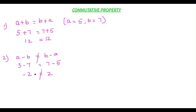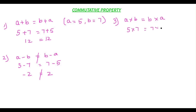Now let's see whether commutative property holds good for multiplication: a times b equals b times a. Using the same values, a equals 5 and b equals 7: 5 times 7 is 35, and 7 times 5 is also 35. So commutative property holds good for multiplication.